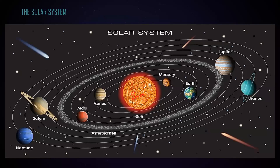We have Mercury, Venus, Earth, Mars, and Jupiter. Then we have Saturn, Neptune, and Uranus. Pluto is not included as a main planet — it is a dwarf planet. So basically there are eight main planets, and there are also minor planets, which are very small. One of them is Pluto.